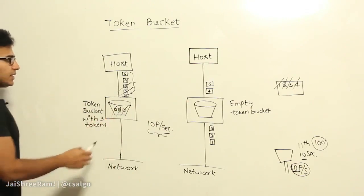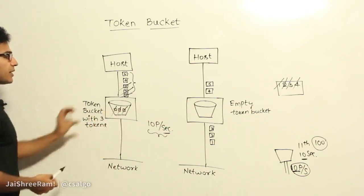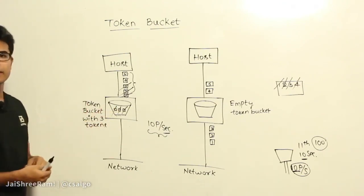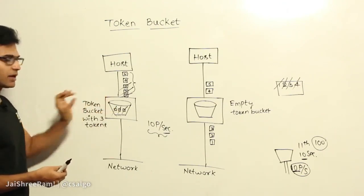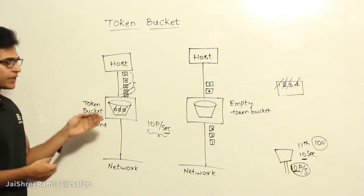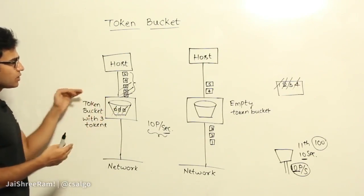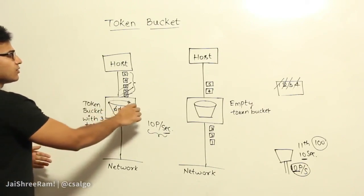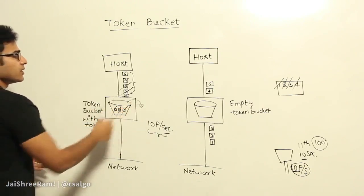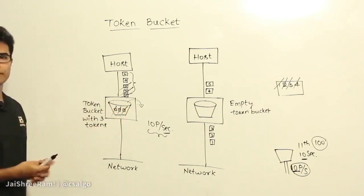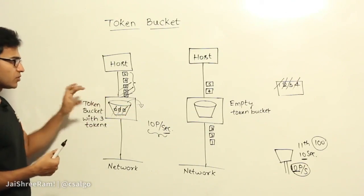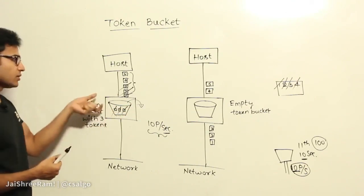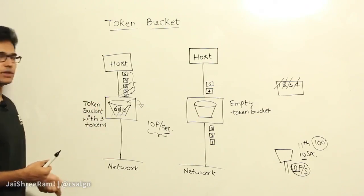One more thing — this bucket also has a capacity. Just as the leaky bucket had a capacity, the token bucket also has a capacity and can hold tokens only up to a certain limit. Once tokens exceed that limit, they overflow. So you can have only a maximum number of tokens depending on the capacity of the token bucket.